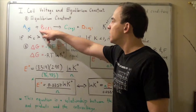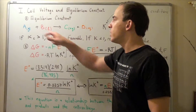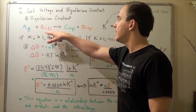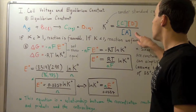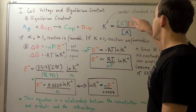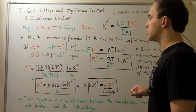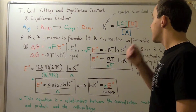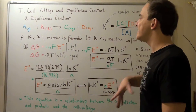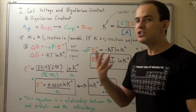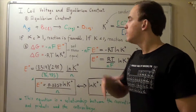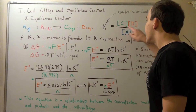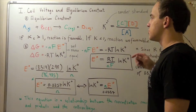Remember, when writing equilibrium constant expressions, only aqueous and gas molecules count. We don't include liquid or solid molecules. That's exactly why we don't include the B molecule — it's in the liquid state. Notice that K is simply a ratio between the product concentrations and the reactant concentration.